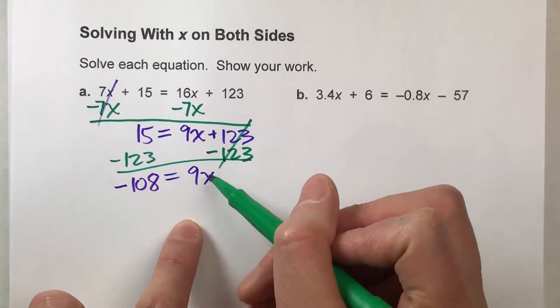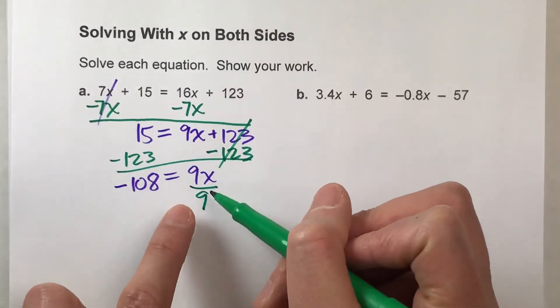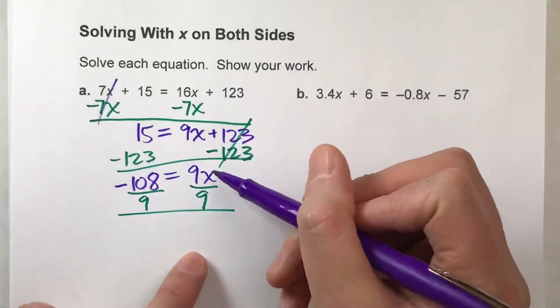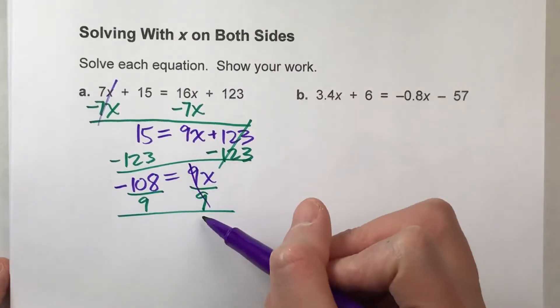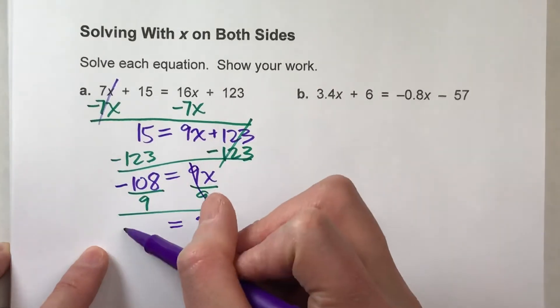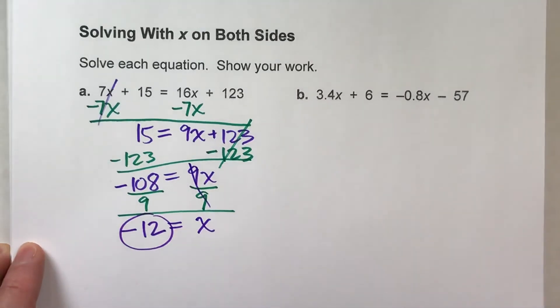Alright. Now to get x, we're going to divide both sides by 9 to undo that times 9. So what I do to one side, I have to do to the other. So when I do that, the 9's undo each other, the x drops down, the equals drops down, and negative 108 divided by 9 is negative 12. And that is my answer.